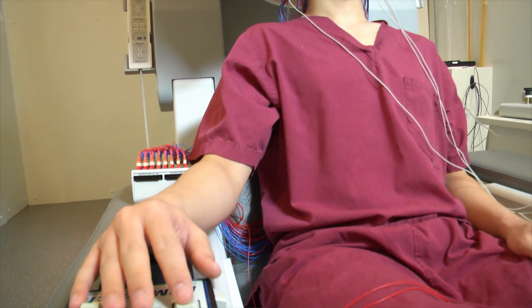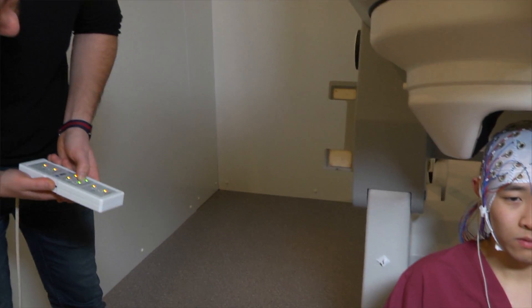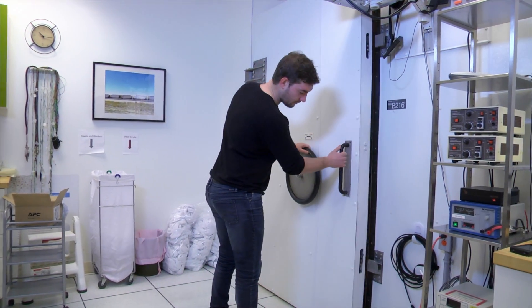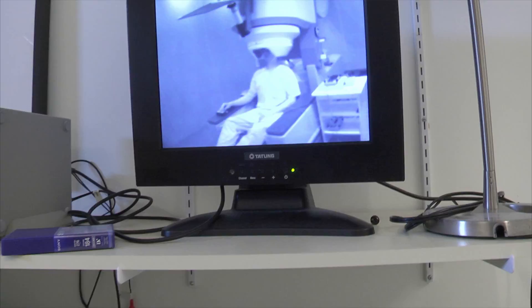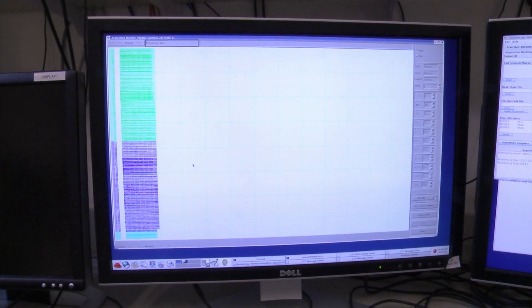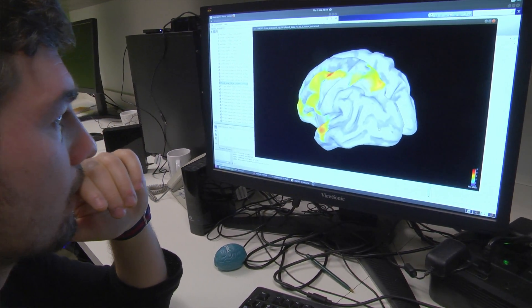We used the spatial and temporal resolution of MEG to localize, during the retention period of the task, the brain areas involved in behavior and task performance. More particularly, this parietal region showed activity in the 5 Hz range, which was both the target for anatomy and for rhythmic stimulation with TMS.